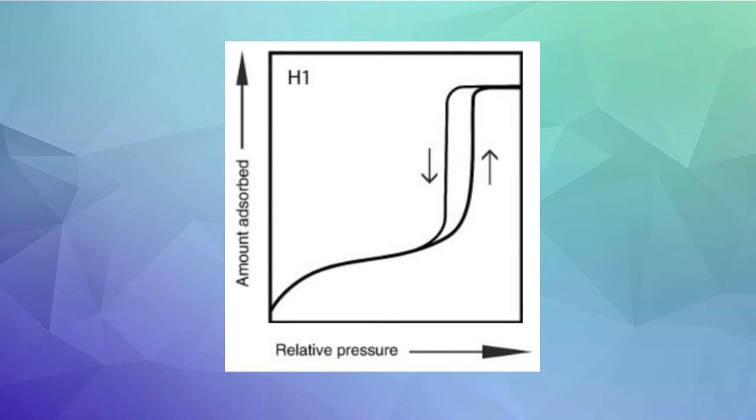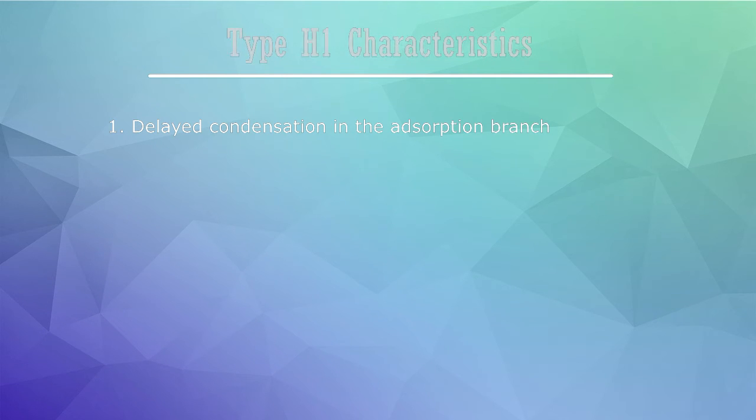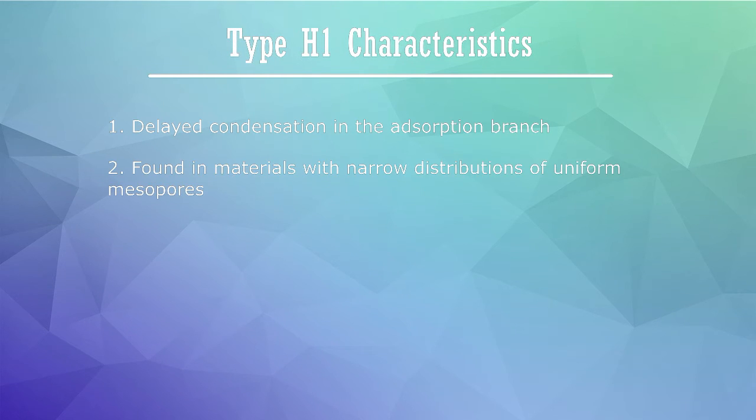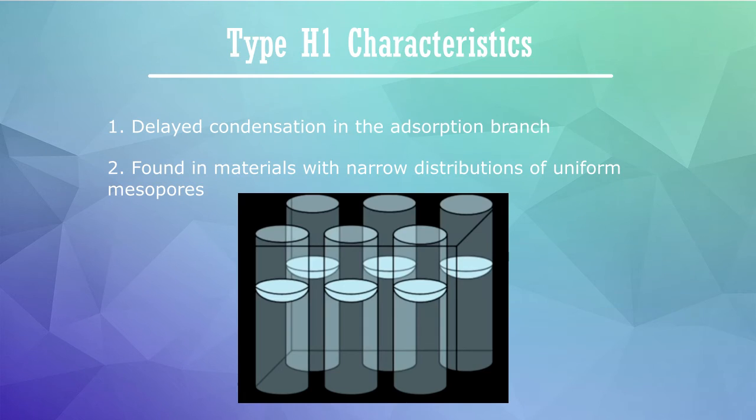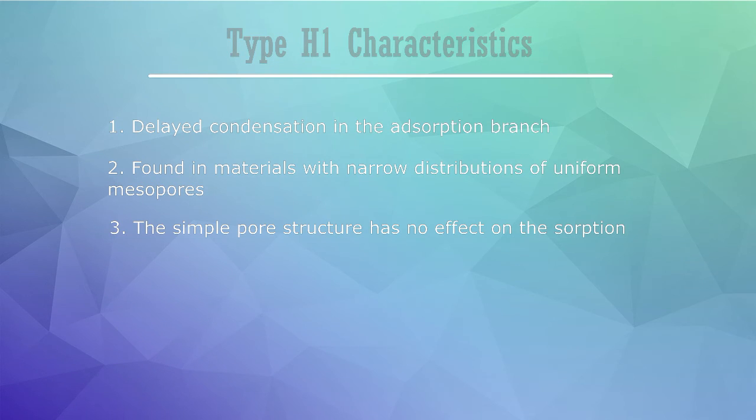The first loop, type H1, is composed of steep adsorption and desorption branches, with a plateau in the adsorbed amount at high relative pressures. The steep and narrow loop is a sign of delayed condensation on the adsorption branch. This type of loop is associated with materials with a narrow distribution of uniform mesopores. Imagine them shaped like cylinders. In this case, the simple pore structure this type is commonly associated with has no effect on the loop.